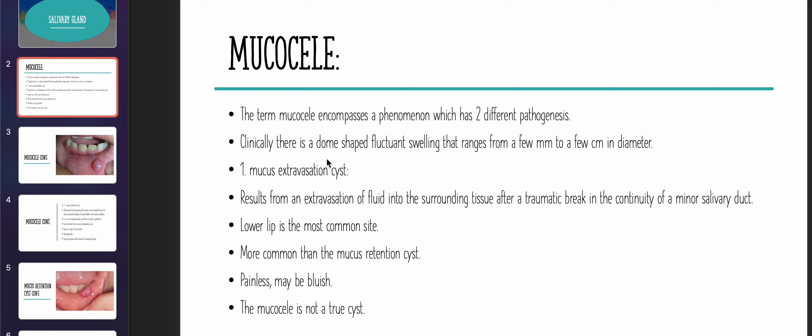Clinically it appears as a dome-shaped fluctuant swelling that ranges from a few millimeters to a few centimeters in diameter. The mucus extravasation cyst results from an extravasation of fluid into the surrounding tissue after a traumatic break in the continuity of a minor salivary gland. The most common site is the lip, and it occurs more commonly than the mucus retention cyst.